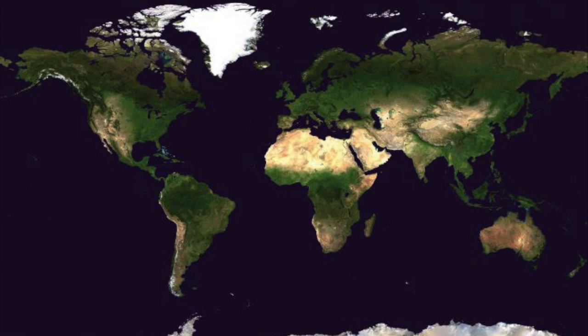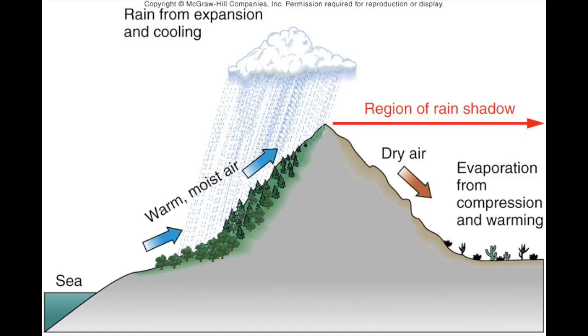Today we will explore three types of deserts. Rain shadow deserts form when a mountain range literally steals the rain, leaving one side lush and green and the other side dry and barren.